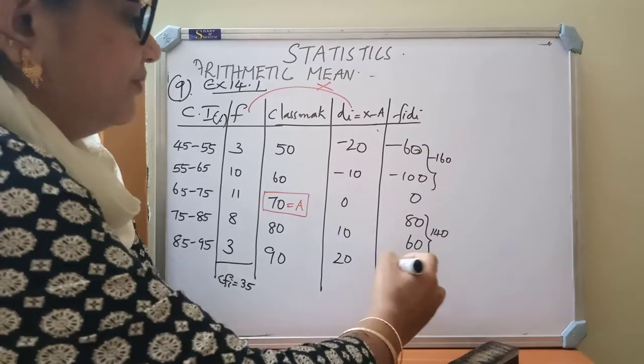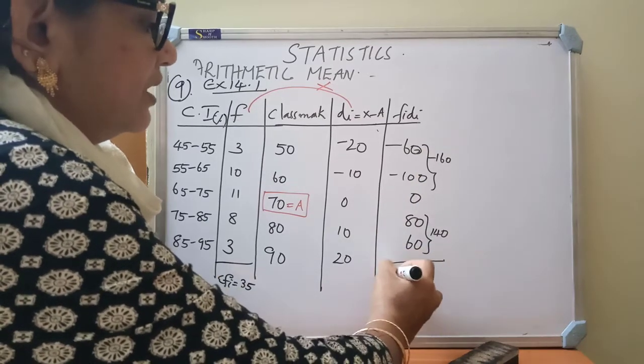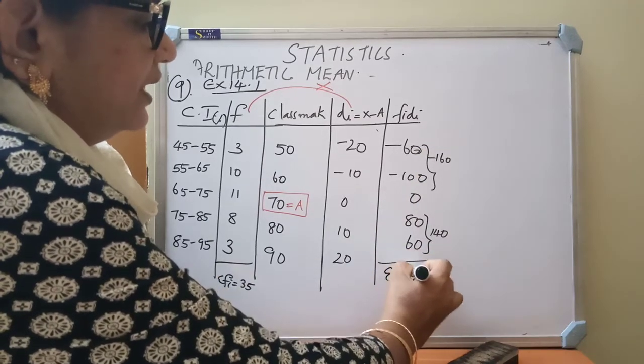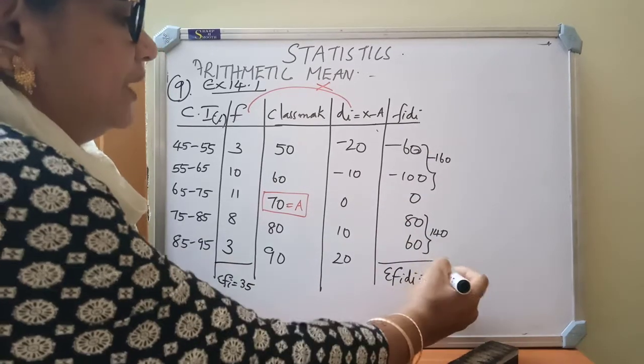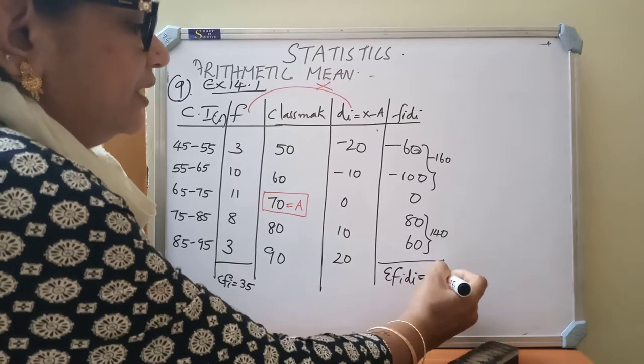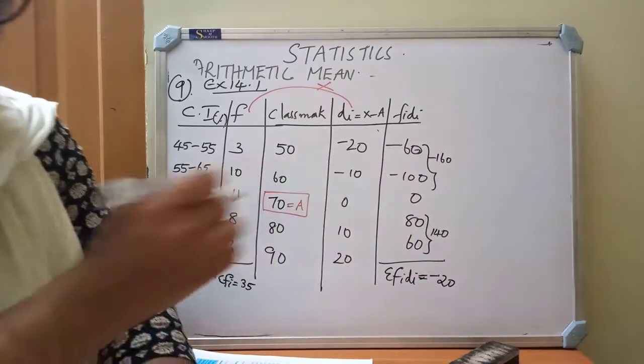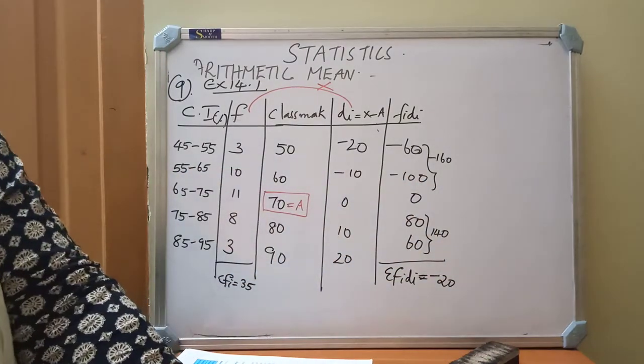What is the difference children. Sigma FYDI. What you will get. 160 minus 140. Greater number sign is minus. Minus 20. So you will get the value as minus 20.